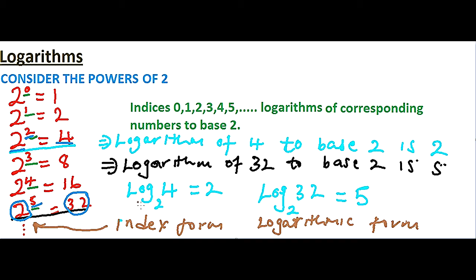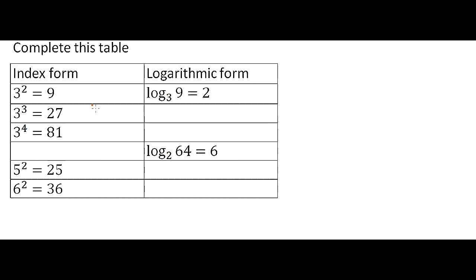Now, if you look at this, we can change from logarithmic form to index form. Note that 2 to power 2 equals 4, and 2 to power 5 equals 32. So we can convert from logarithmic form to index form. We are going to use the information on the table shown here to convert from index form to logarithmic form, and from logarithmic form to index form.